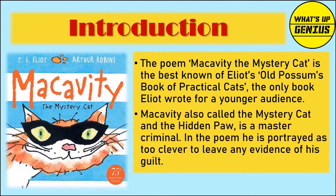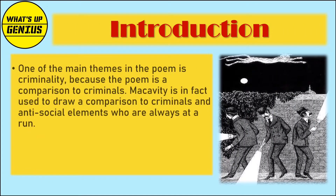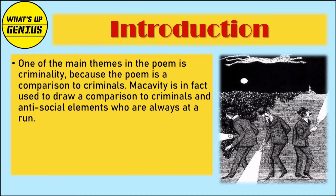Macavity, also called the Mystery Cat and the Hidden Paw, is a master criminal. In the poem he is portrayed as too clever to leave any evidence of his guilt. One of the main themes is criminality, as the poem draws a comparison to criminals and anti-social elements who are always on the run.